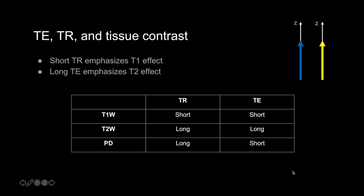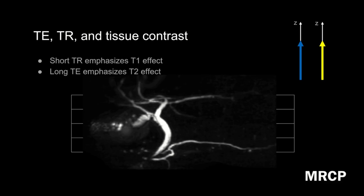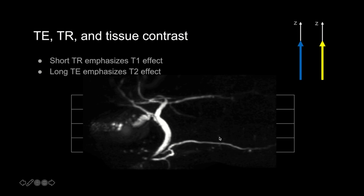Let's apply these concepts to something clinically relevant. This is an MRCP, or Magnetic Resonance Cholangiopancreatography image — a technique used to image the biliary and pancreatic ducts, helping us look for stones, strictures, tumors, etc. We're really trying to get a good look at the ducts: this is the CBD here, these are the intrahepatic ducts, and this is the pancreatic duct. This is an example of a thick slab MRCP image, and these are just very, very heavily T2-weighted images.